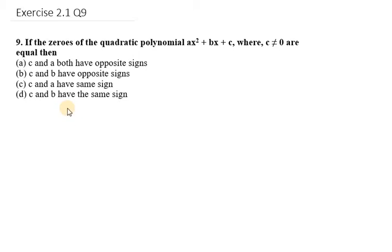Hello everyone. Question number 9 says if the zeros of the quadratic polynomial ax² + bx + c, where c is not equal to 0, are equal then. So in this case it is given that we have equal roots.